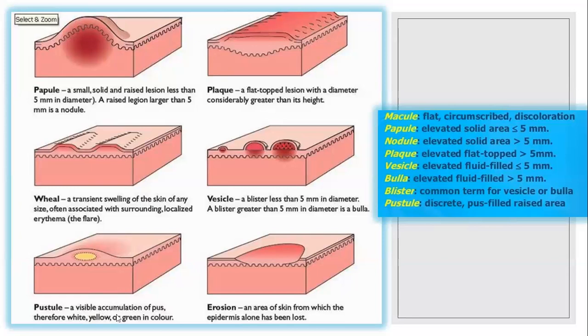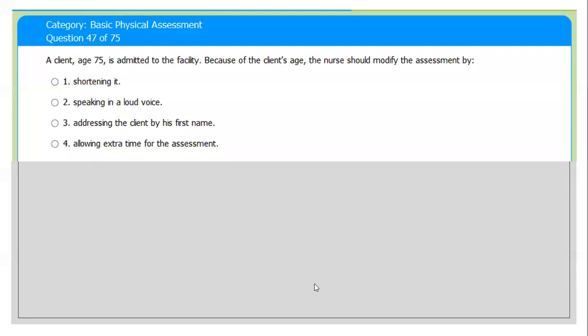Pustule: a visible accumulation of pus. Sometimes it is white, yellow, or green in color. Erosion: an area of the skin from which the epidermis alone, or tissue, is lost.